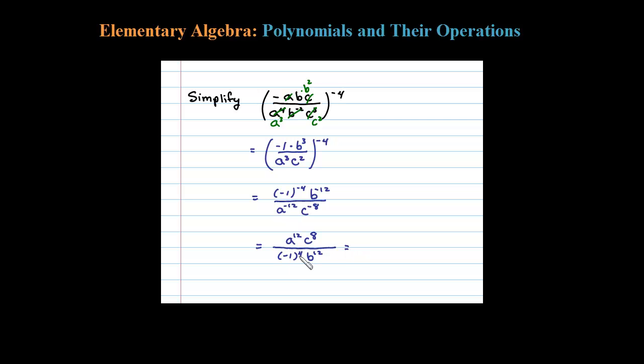Negative 1 to the fourth power is negative 1 times itself four times, and that's just positive 1. So I'm going to write this as a to the 12 c to the 8th, all over b to the 12th, and that's our final answer.